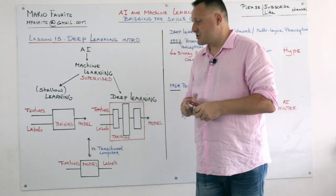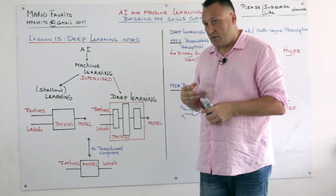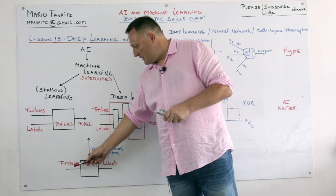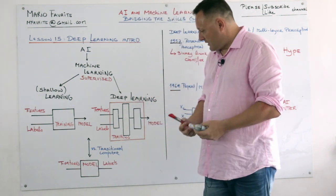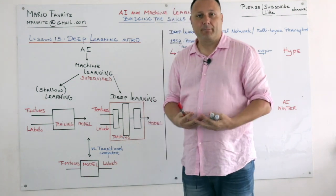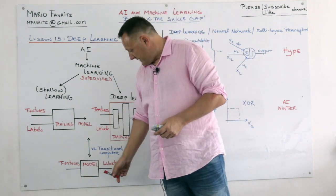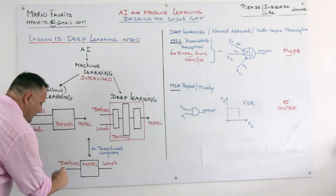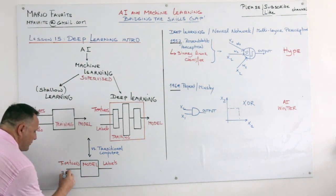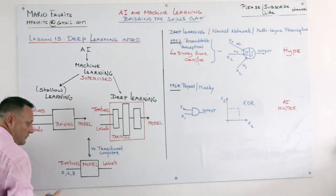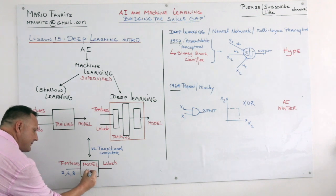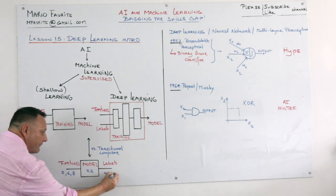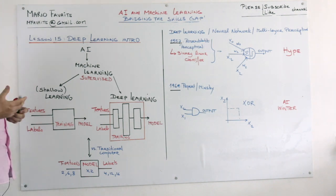So let me first show you the contrast with traditional computing. The way we know computing, or most of you will know computing, is this model here. You have features that are inputs. You have a computer that has a program that runs on these features and gives you labels. I give you an example. You could have here the numbers 2, 6, 8. You could write a program that multiplies these features with 2, and then the labels will be 4, 12, 16. This is how we know computers.